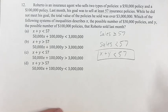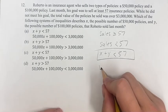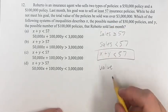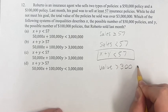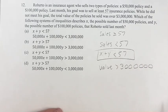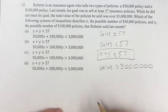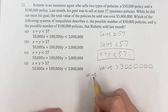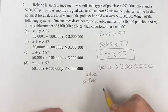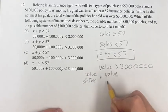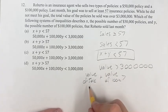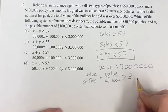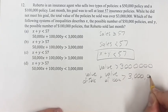The second inequality comes from the total value of the policies sold being over $3 million, meaning the value was greater than $3 million. How do we calculate the value? It's going to be the value of the $50,000 policies plus the value of the $100,000 policies, and when you add the two values combined, you get over $3 million.